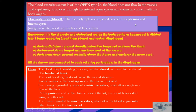The blood vascular system is open type, which means blood doesn't flow in vessels and capillaries but moves through internal open spaces — the hemocoel — and comes in contact with body organs. Hemolymph is the blood, composed of colorless plasma and hemocytes, meaning irregular white blood corpuscles and leukocytes.